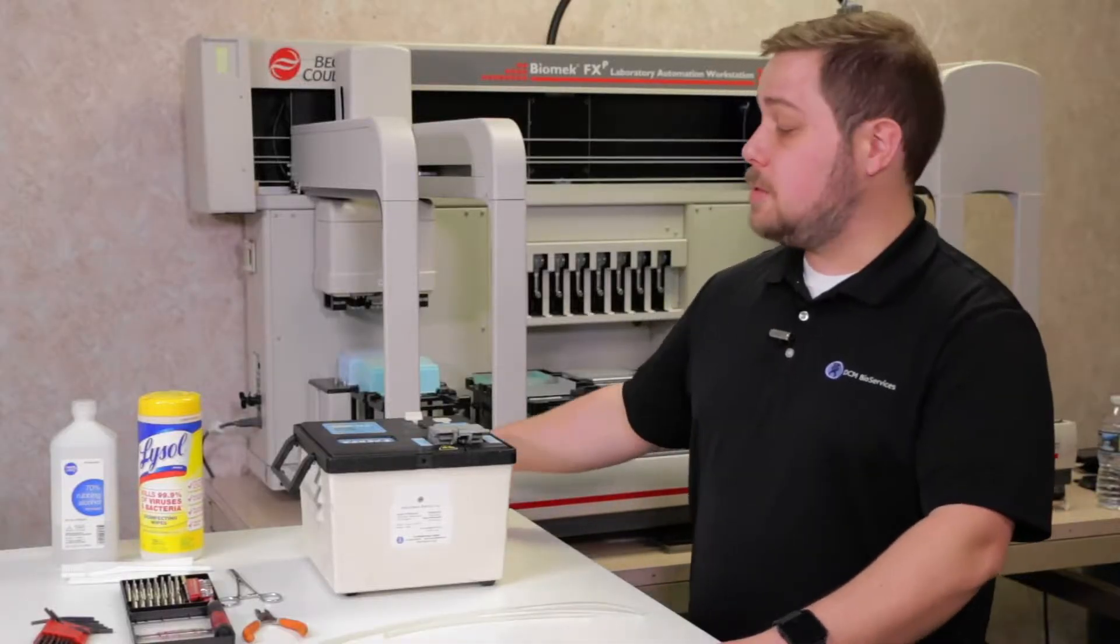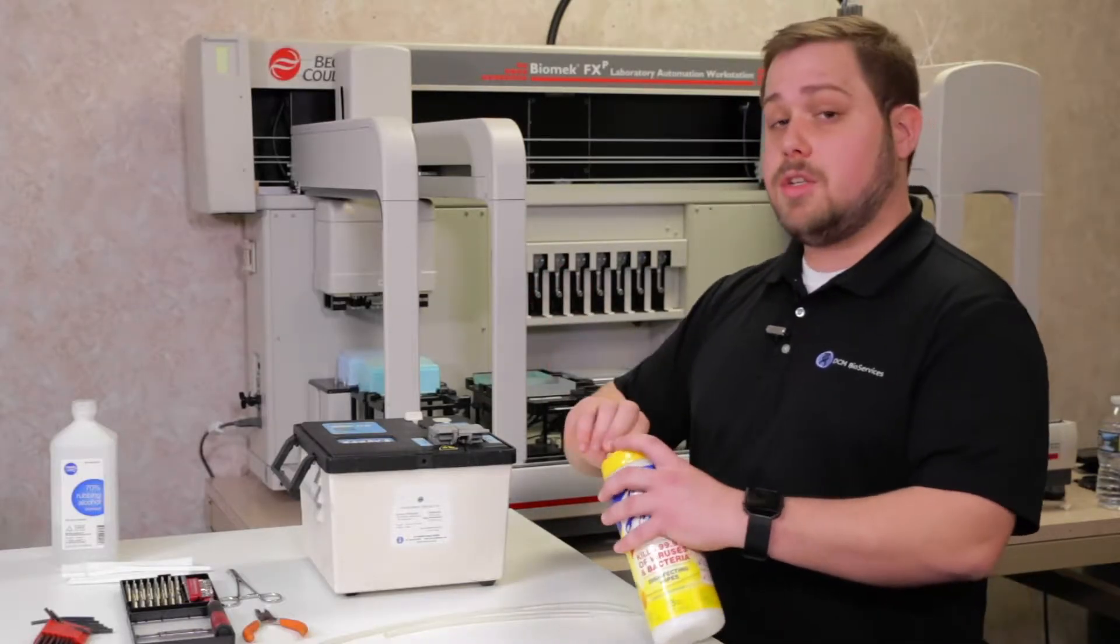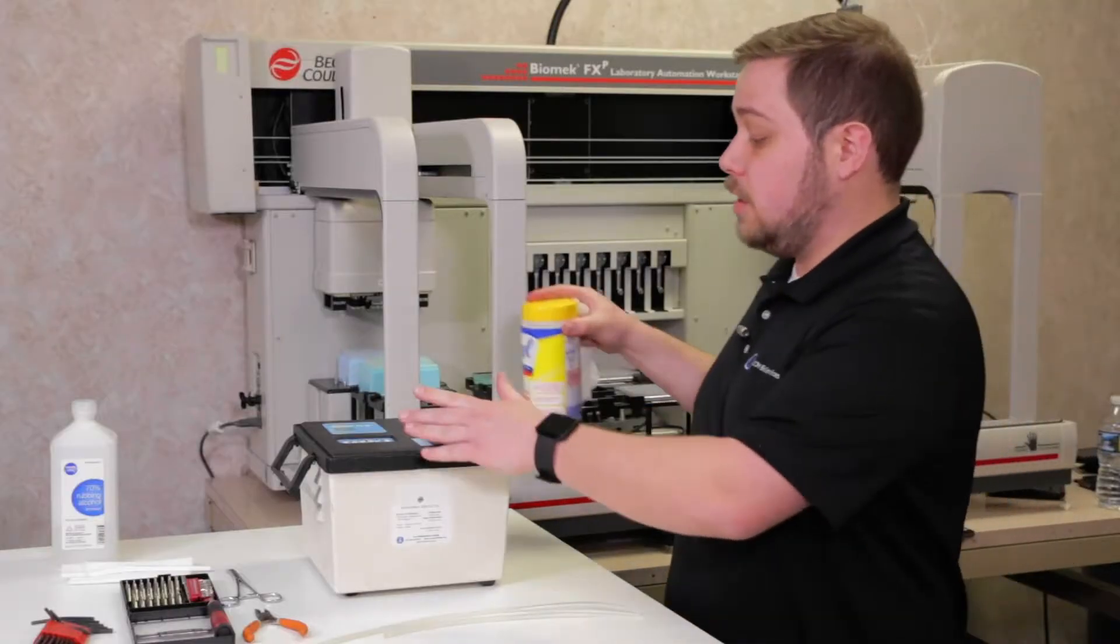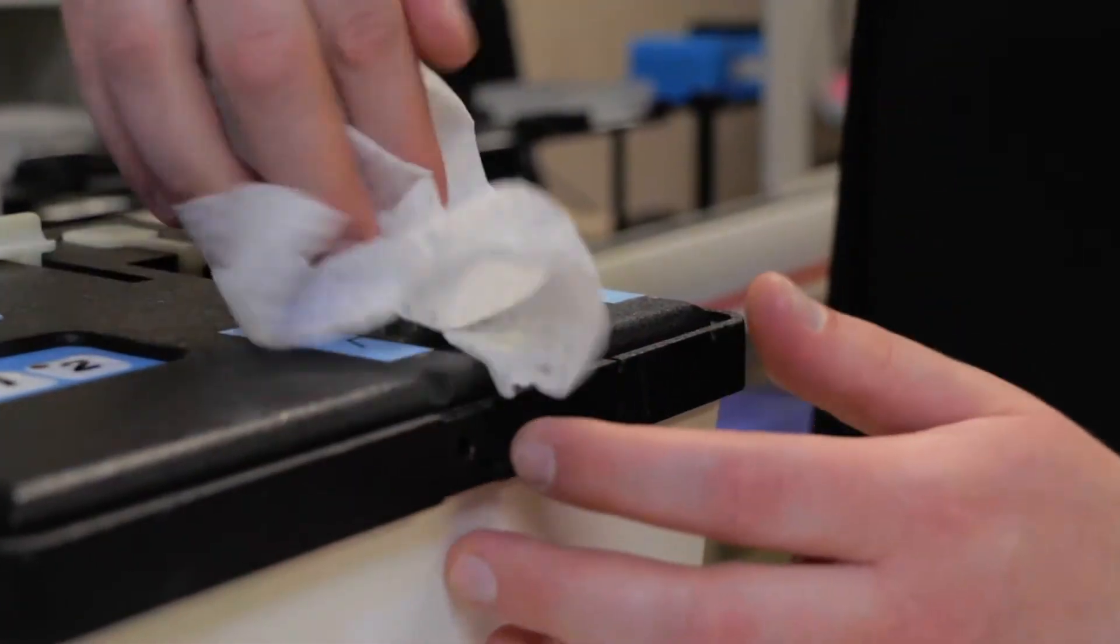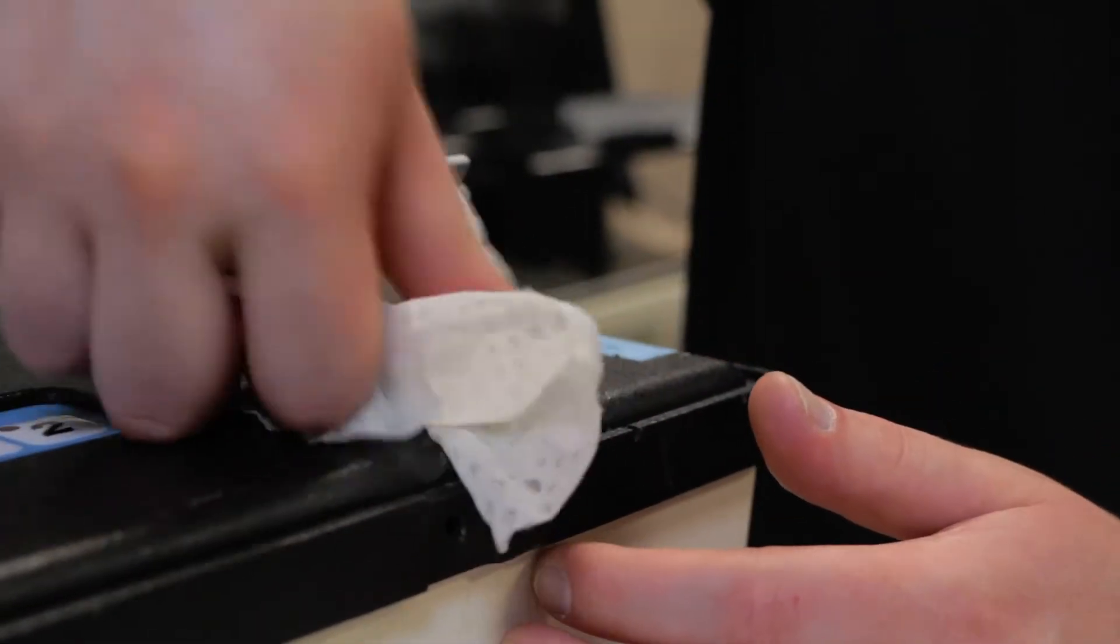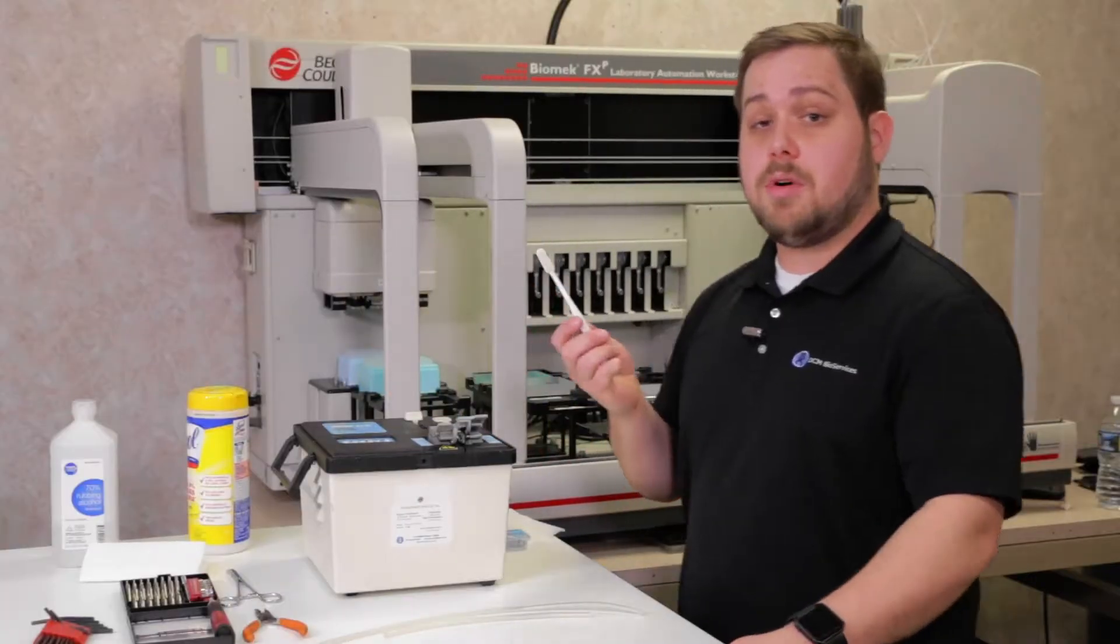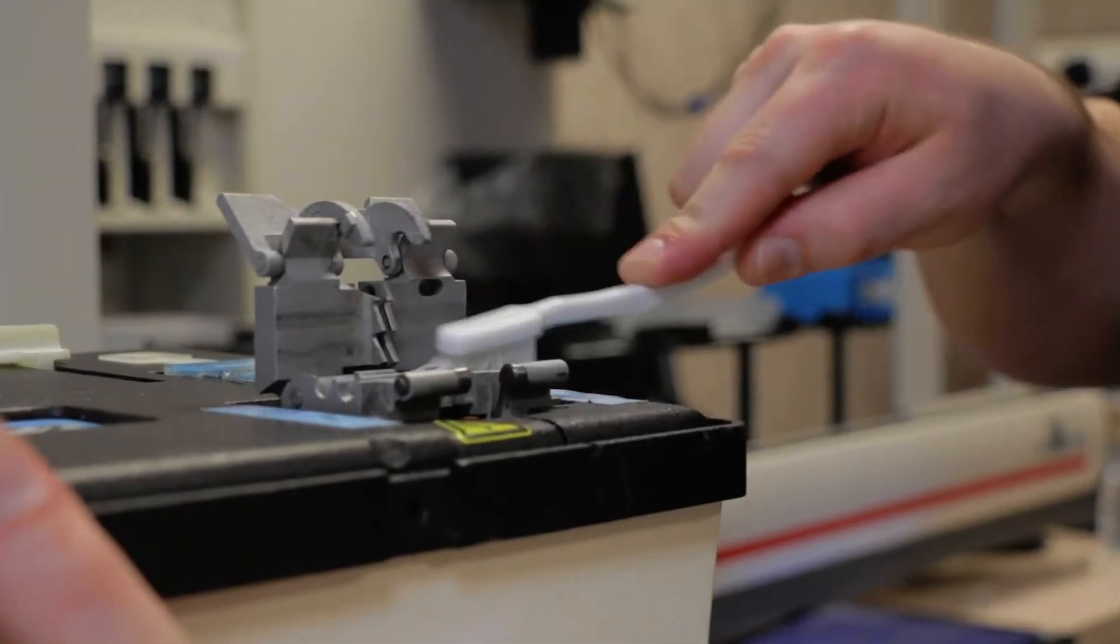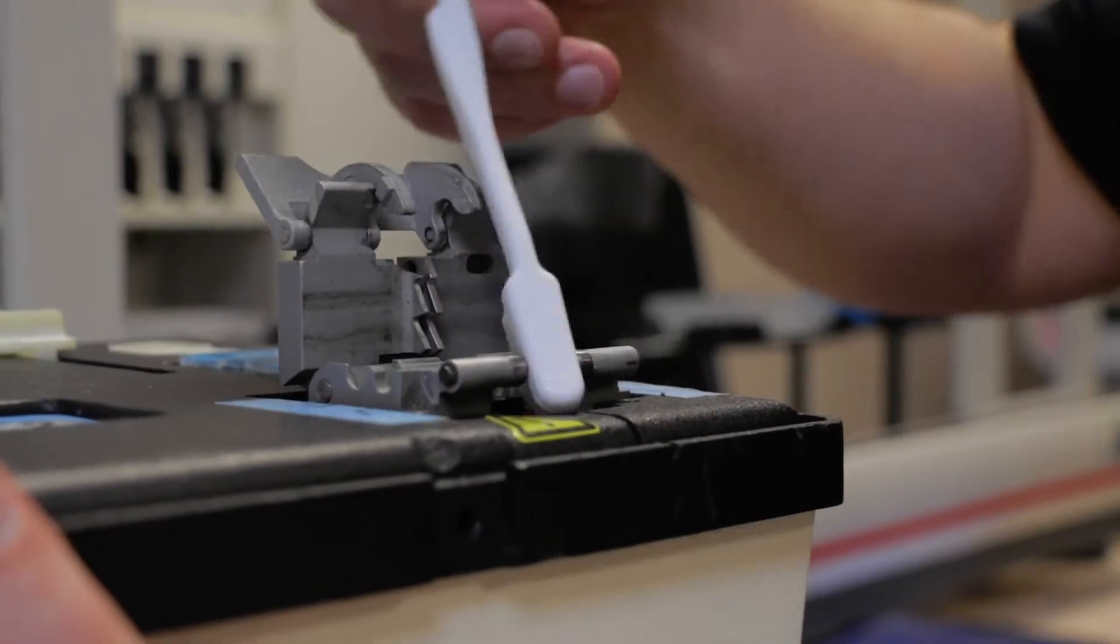When cleaning your welder, it's best to use some form of wipe. Avoid spraying anything onto the deck of the welder, as the control board and power supply are housed immediately below the top cover. Simply wipe down the carriers, the weld assembly, and anywhere else you may see contaminants. If a wipe isn't sufficient, you can use a toothbrush with a little bit of alcohol. Same concept, simply scrub any area that you see contaminants.